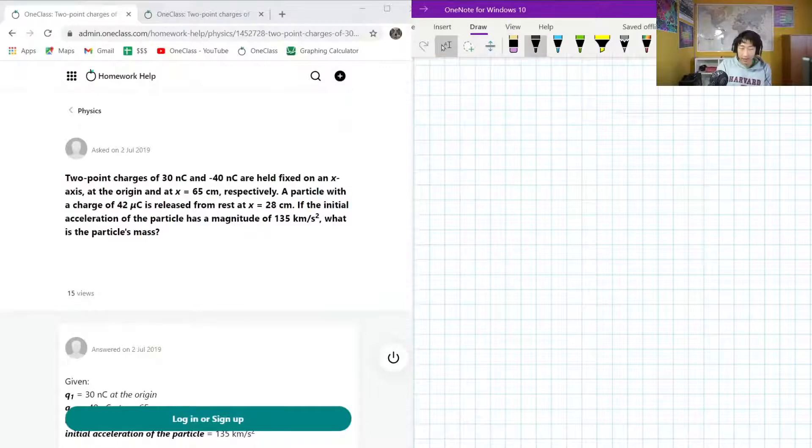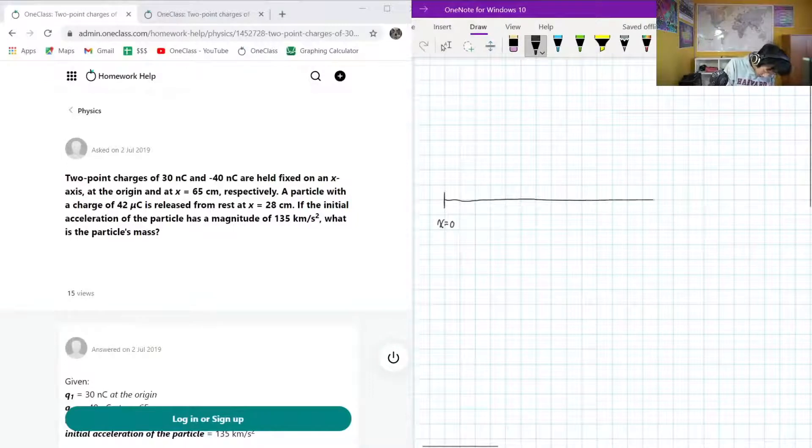As we should start this off, as we should start in many situations, we want to have a diagram to kind of give ourselves a visual representation of what is going on in this question. Okay, so here we have x equals 0. Let's just get our locations of interest at first. And then we have 65 centimeters as a location of interest. This is absolutely not to scale, but it's not that important.